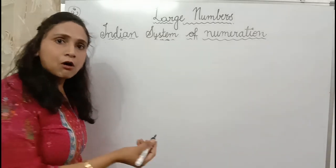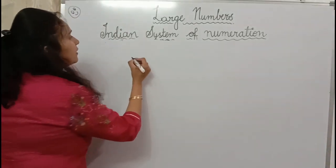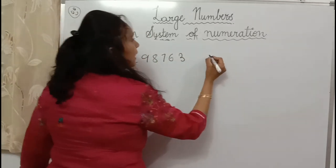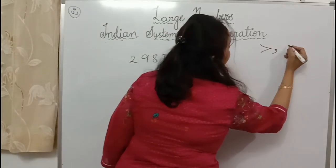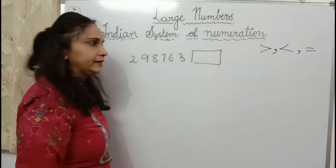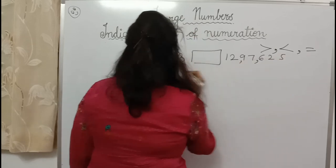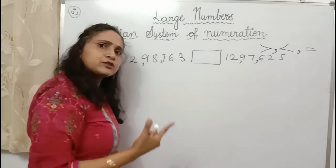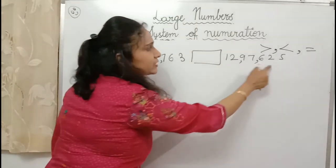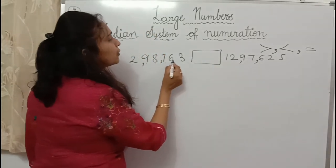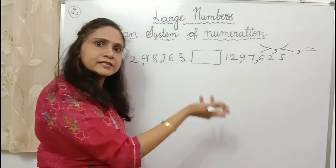Now we will do ordering. Before ordering, first we learn how to compare two numbers. If I have 2,98,763 and 1,29,7625 — put a greater than, less than, or equals to sign. First rule of comparing: count the number of digits. Here I have 6 digits and here I have 7 digits. Greater the number of digits, greater the number. So the crocodile's mouth opens at the bigger number.